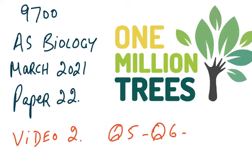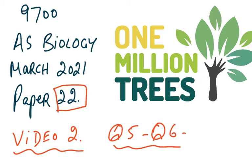Again we have AS Biology 9700 March 2021, and this is the second video on this paper in which we're going to discuss question 5 and 6 only. We've done questions 1, 2, 3, and 4 in the first video on this paper, which is the March 2021 Paper 2. In March there's only one paper — there's no other variant.